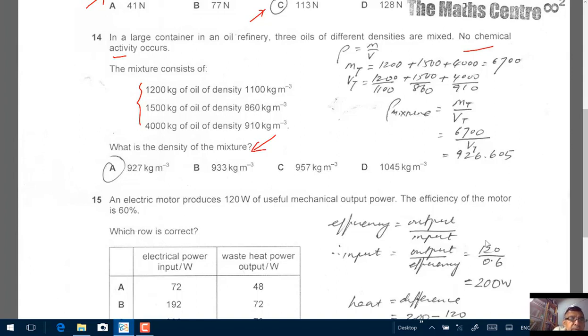The only formula we are going to use is density equals to mass over volume. Now the mass is easy. Now the mass you just need to add up this plus this plus this. You add the three masses up m1 plus m2 plus m3, you will get mt. I use t here for total. So total mass will be 1200 plus 1500 is 2700, 2700 plus 4000 will be 6700. There you have it. 6700 kg.